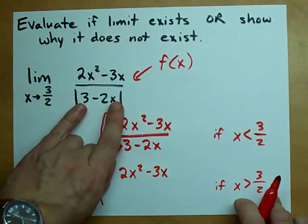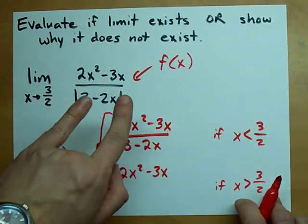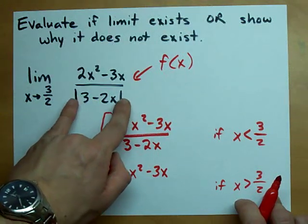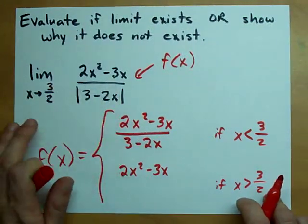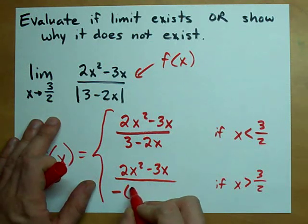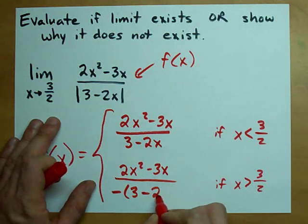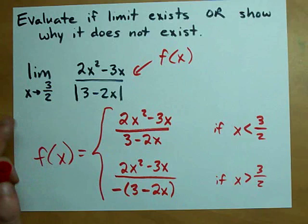In that case, the absolute value bars serve to flip the sign of whatever value is in here. Or put another way, you end up with the negative of what's in the absolute value.